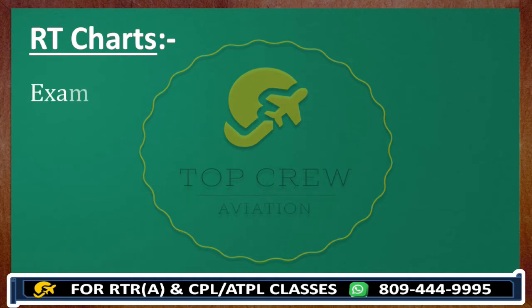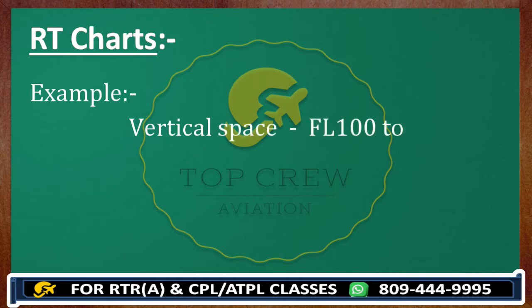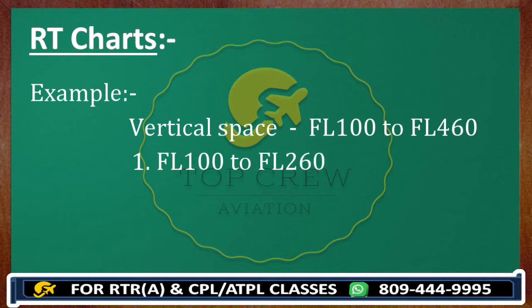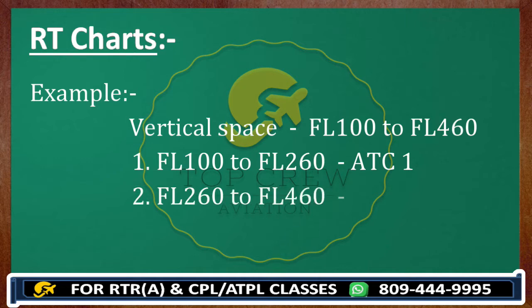Let's take another example. The vertical space of any area controller is from flight level 100 to flight level 460. Now, just to avoid confusion, if any area is overlapping, we have given separation. So from flight level 100 to flight level 260 would be dealt by one ATC, and from flight level 260 to flight level 460 would be dealt by a different ATC. It is just to avoid confusion, and we have to be careful while giving exams or while making calls.